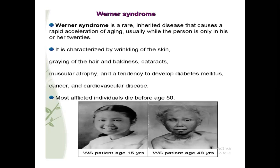In Werner's Syndrome, cataract also develops in the eyes, muscular atrophy occurs, and there is a tendency to develop diabetes mellitus, cancer, or cardiovascular diseases. These persons generally do not live beyond 50 years - they tend to die by the age of 50. This picture shows Werner's Syndrome: a lady whose age is 15 years, she develops Werner's Syndrome, and by 48 years her face looks as if she is 70 or 80 years old.